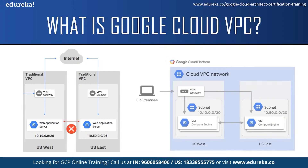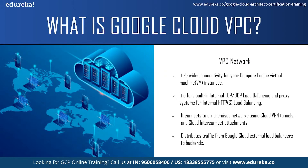Now let us understand VPC networks. You can think of a VPC network the same way as a physical network, except that it is virtualized within Google Cloud. A VPC network is a global resource that consists of a list of regional virtual subnetworks in data centers, called subnets, all connected by a global wide area network. VPC networks are logically isolated from each other in Google Cloud. Some functionalities offered by Google Cloud VPC networks include connectivity for Compute Engine virtual machine instances including Google Kubernetes Engine clusters, App Engine instances, and other Google Cloud products. It offers built-in internal TCP/UDP load balancing and proxy systems for internal HTTPS load balancing, and can connect to on-premises networks using Cloud VPN tunnels and Cloud Interconnect attachments.